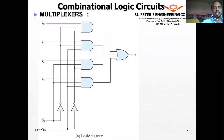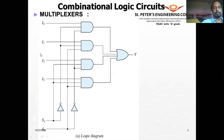Now let us consider 2 select lines. With 2 select lines, 2^2 equals 4, so we have 4 input lines. This same understanding from the single-select-line, 2-input, 1-output circuit can be extended to a 2-select-line, 4-input, 1-output multiplexer — called a 4-to-1 multiplexer.